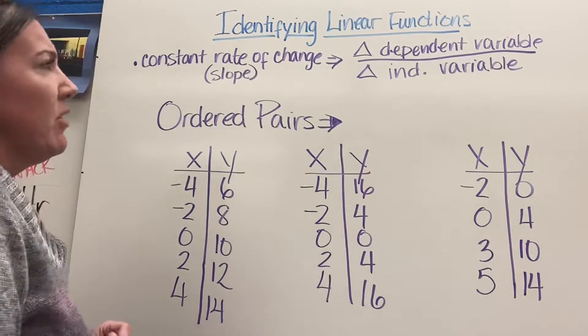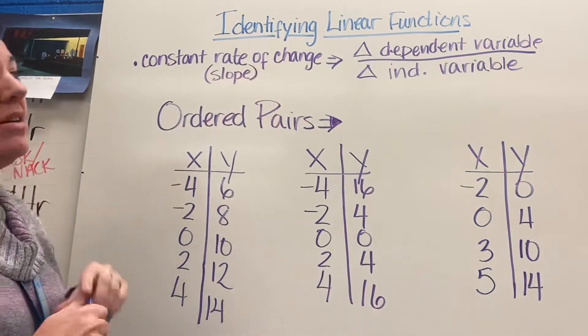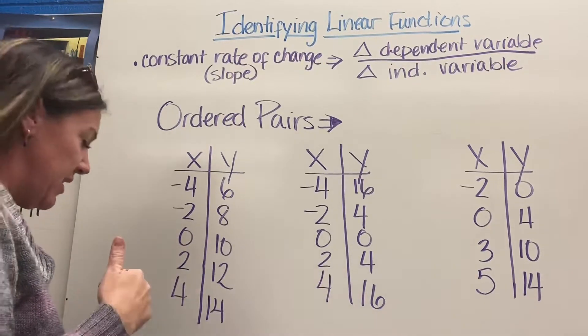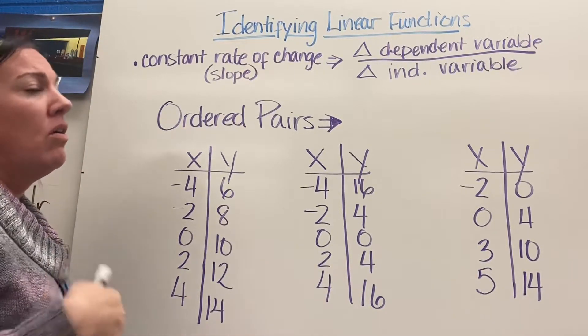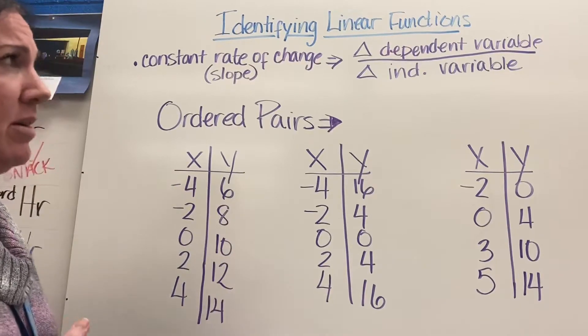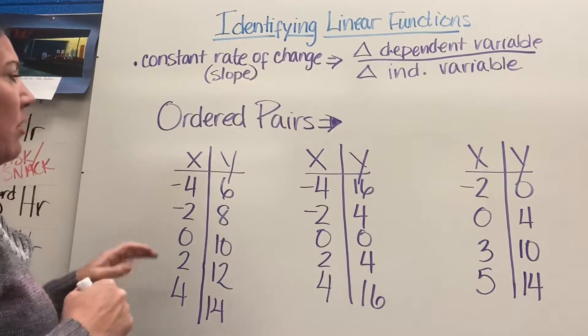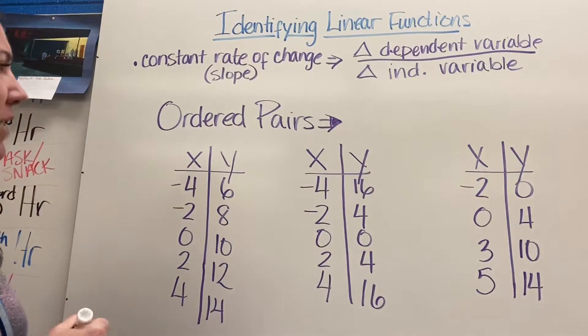When we look at ordered pairs, we're going to come back up to here. The constant rate of change is the change in the dependent variable over the change in the independent variable. If you remember, the dependent variable is the Y value.